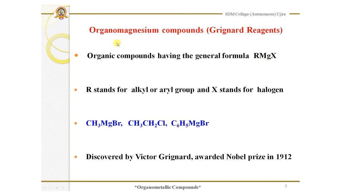Grignard reagents are also called organomagnesium compounds. Organomagnesium compounds are a very important class of organometallic compounds. They have the general formula RMgX, where R stands for an alkyl or aryl group and X stands for halogen. Examples of Grignard reagents are methyl magnesium bromide, ethyl magnesium chloride, phenyl magnesium bromide, etc.